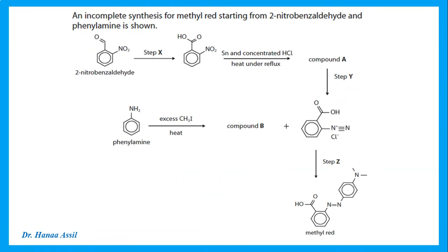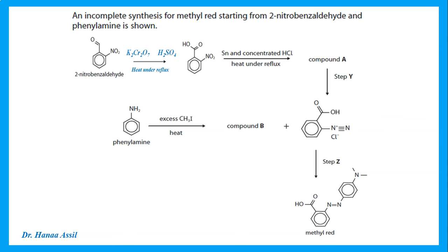An incomplete synthesis for methyl red, starting from 2-nitrobenzaldehyde. The first step is changing the aldehyde group into an acid — that's oxidation using potassium dichromate, sulfuric acid, and heat under reflux — which changes the aldehyde into the carboxylic acid group.